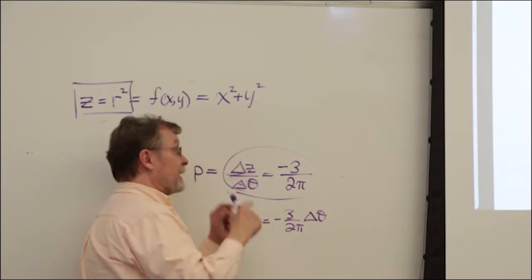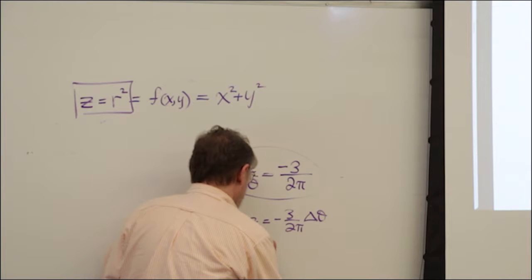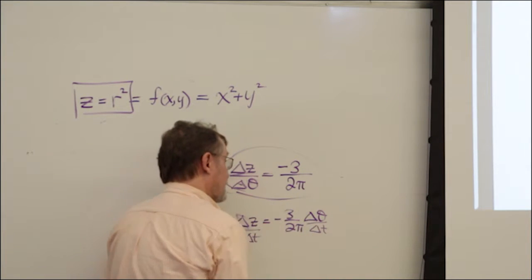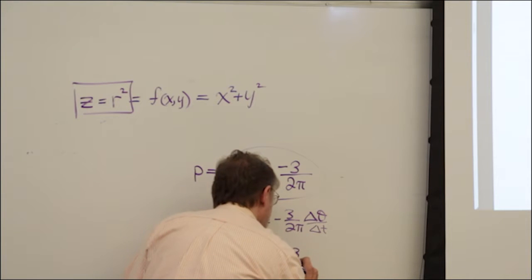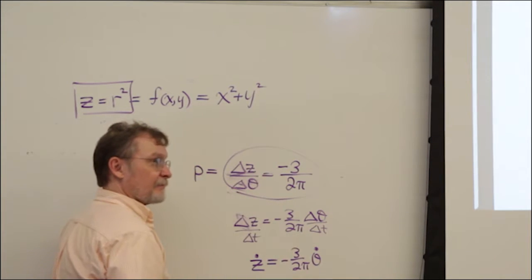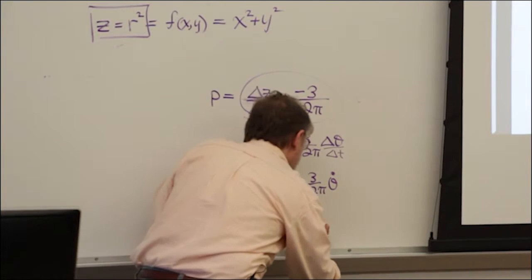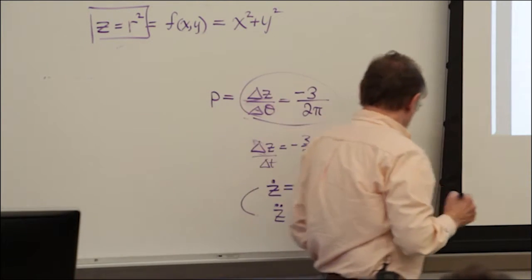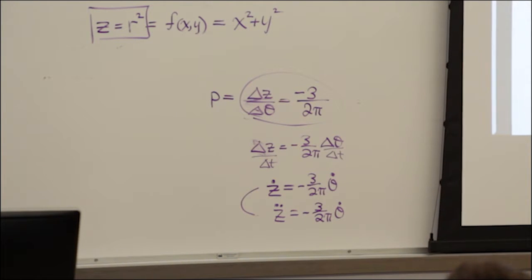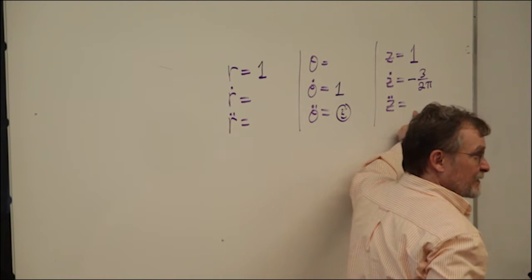During any interval of time, delta Z equals minus 3 over 2π times delta theta. Dividing by delta t and taking the limit: z-dot equals minus 3 over 2π times theta-dot. Taking another derivative: z-double-dot equals minus 3 over 2π times theta-double-dot. Since theta-dot equals 1, z-dot equals minus 3 over 2π. Since theta-double-dot equals zero, z-double-dot equals zero.